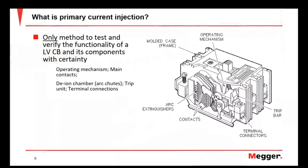So what is primary current injection? Primary current injection is the only method we can effectively use to do a functional test on circuit breakers and some other components. It's the only method we can use to verify that all the mechanisms within a circuit breaker are going to operate as intended whenever it's in use in a real-world scenario.